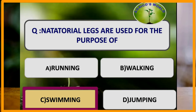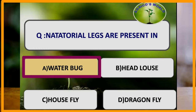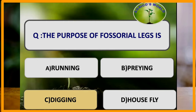Natatorial legs are used for which purpose? Natatorial legs are used for swimming, and these type of legs are present in water beetles and water bugs. The hind legs of water beetles and water bugs are pad-like, and the tibia and tarsi are short and broad, having dense long marginal hairs which help in swimming.